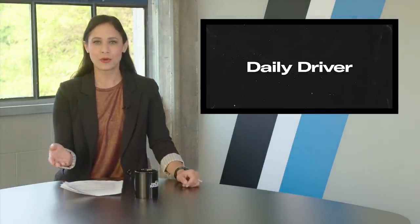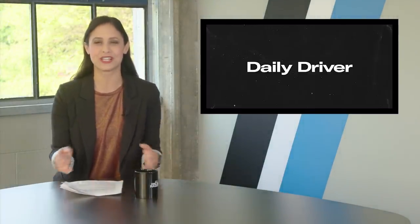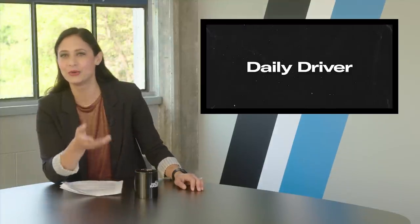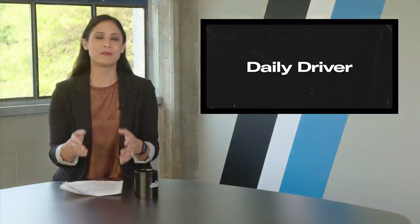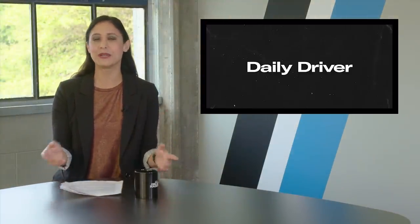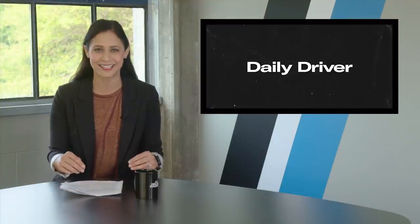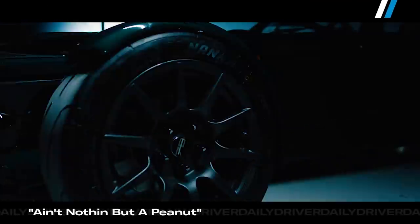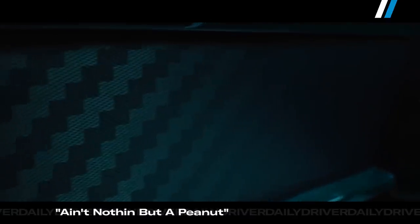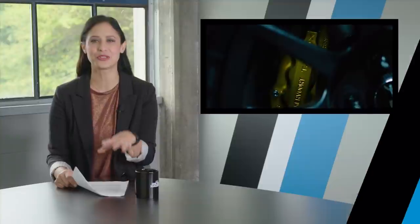And on an even lighter note, literally guys, Donkervoort has unveiled an ultralight version of its D8 GTO JD70. Guys, who names these things? Seriously. Well, it's called the Bare Naked Carbon Edition, and it'll make Miatas want to go on a diet. It weighs, get this, 1,526 pounds with the engine, tires, and everything total. Plus, it's road legal.